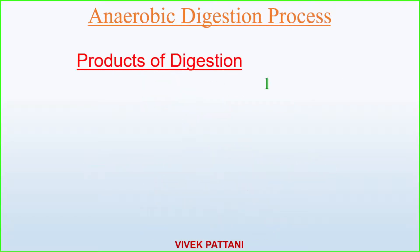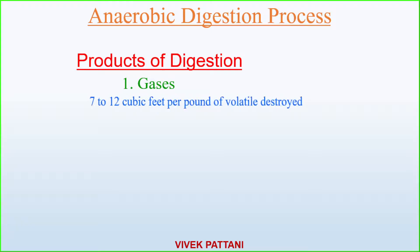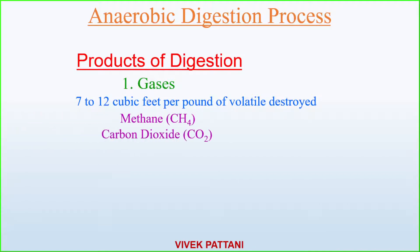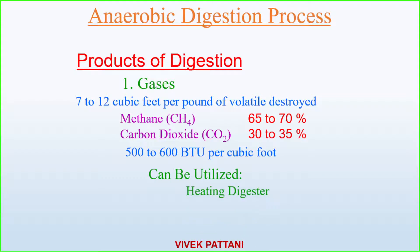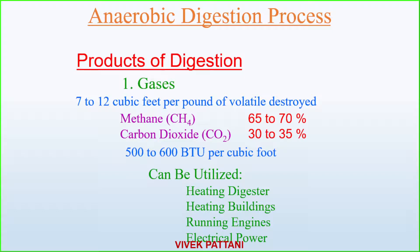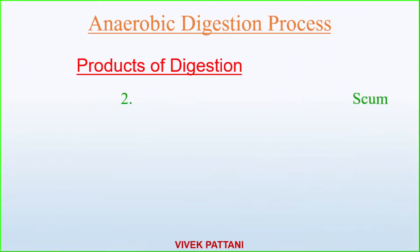The products of digestion include gases: approximately 7 to 12 cubic feet per pound of volatile solids destroyed. The gases are methane and carbon dioxide, of which methane is almost 65 to 70 percent and carbon dioxide is 30 to 35 percent, with an energy value of 500 to 600 BTU per cubic foot.